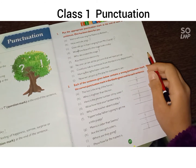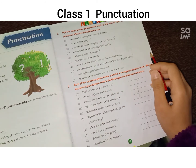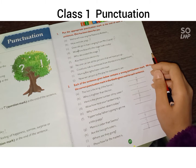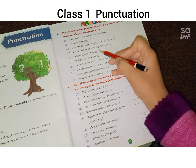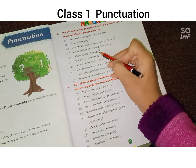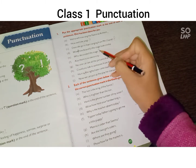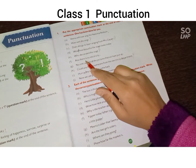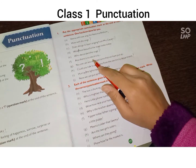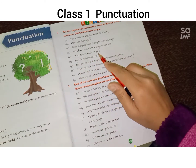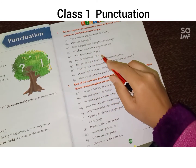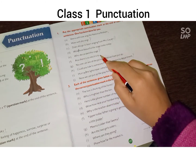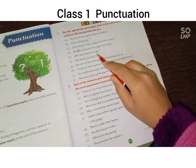Question 5: 'Who would decorate the stage?' Stage ko decorate kisne kia — yeh ek question hai, toh yahan isके last mein hum question mark ka sign lagaayenge. Question 6: 'Alas, there is no electricity.' यहाँ पर full stop ka sign lagaayenge.